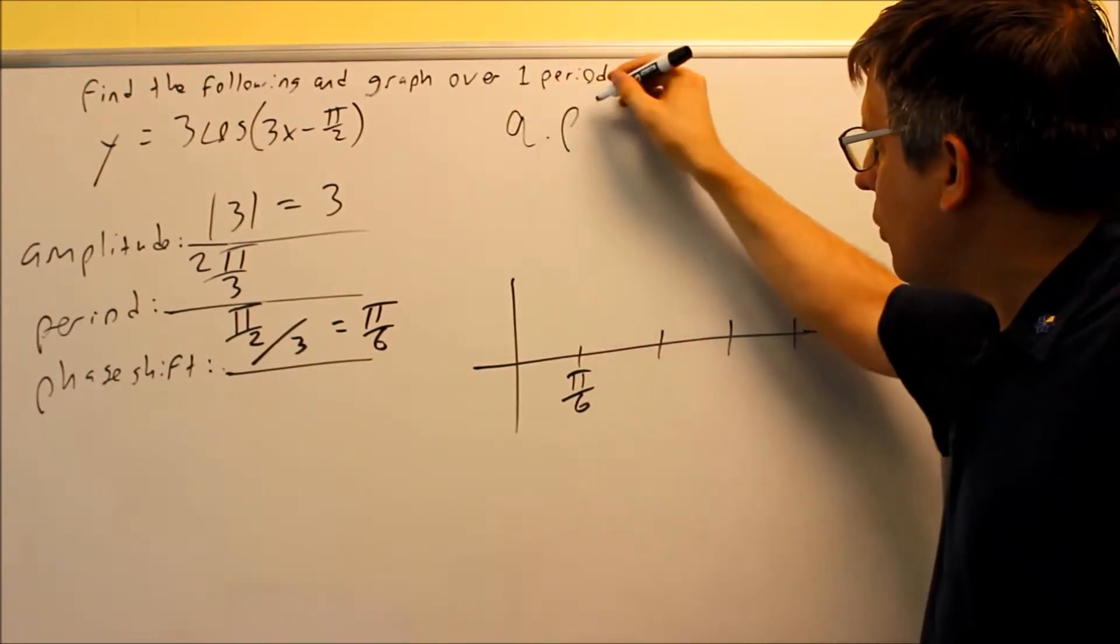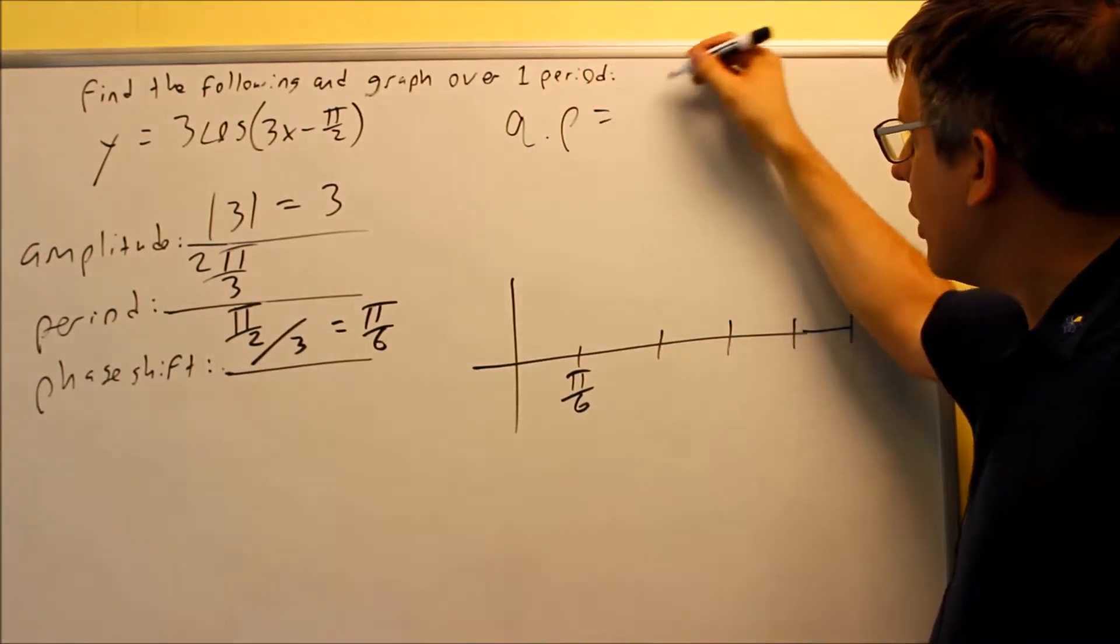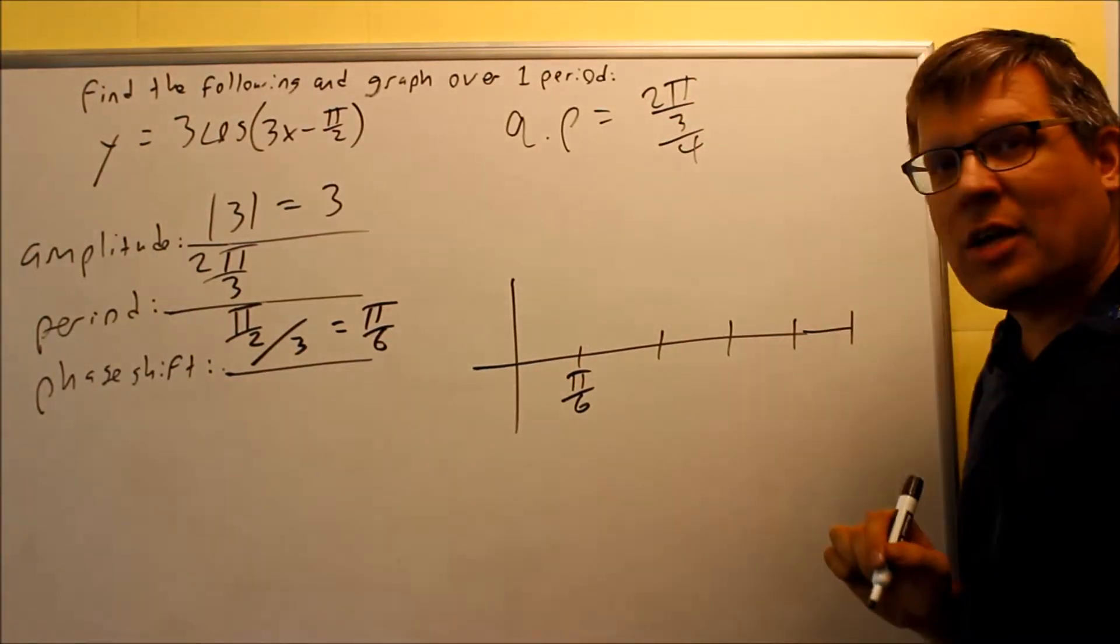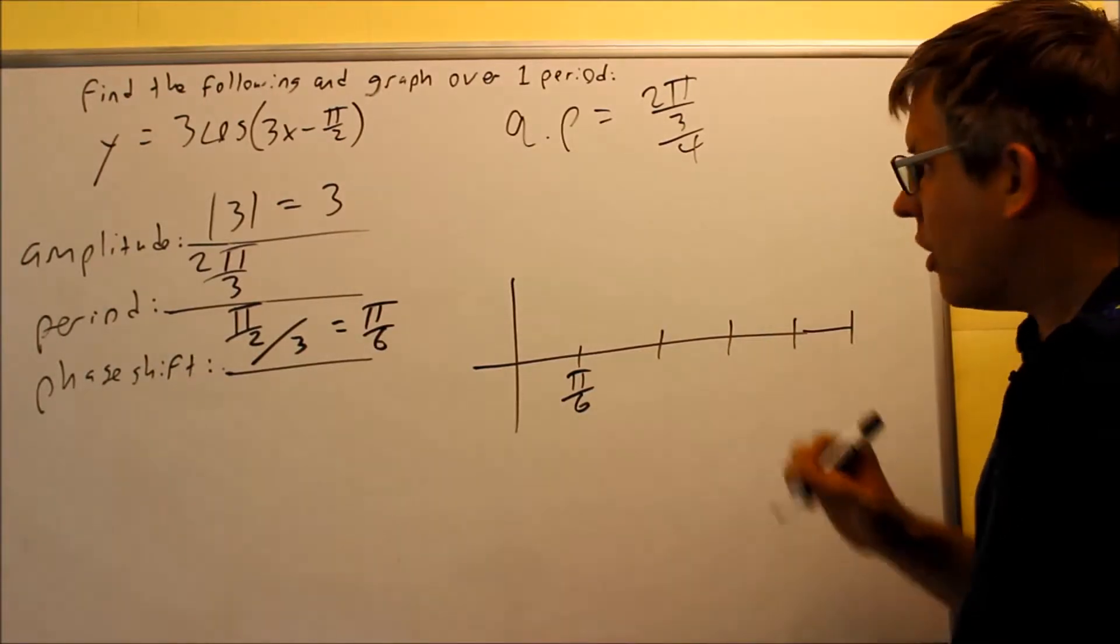So up here I'm going to find my QP, my quarter point. That's going to be period, which is 2π over 3. I always want to divide my period by 4 when you find your quarter points.